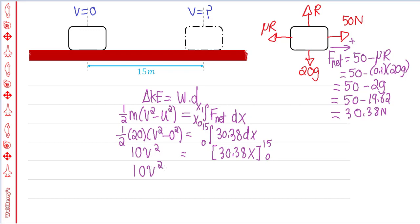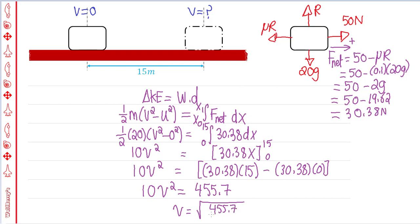So it's going to be 10 v squared is equal to 30.38 multiplied by 15 minus, I'll do the full steps even though we don't need to, because in this case the second distance is 0 anyway, multiplied by 0. That's the full integration. Now this gives us 10 v squared is equal to 455.7. Therefore v is equal to the square root of 455.7 all divided by 10, which will give you a value of 6.75 meters per second.